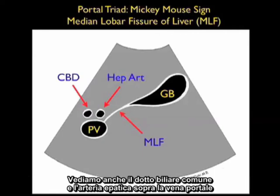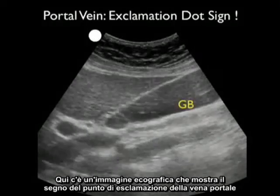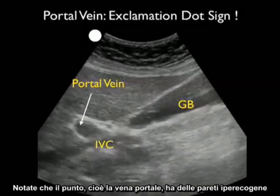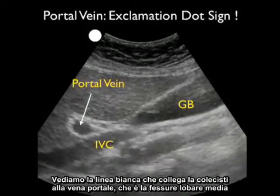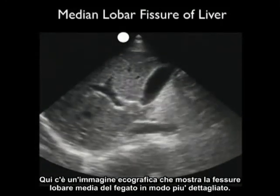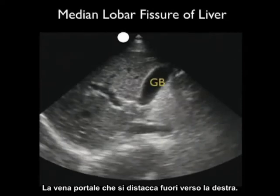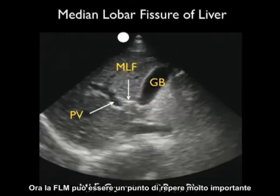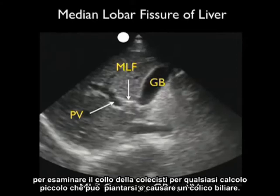We also see the common bile duct and hepatic artery on top of the portal vein, making up the structures of the portal triad. Here's an ultrasound image showing the portal vein exclamation dot sign — the gallbladder to the right makes the exclamation and the portal vein to the left makes the dot. Notice the portal vein has hyperechoic walls due to bringing fatty blood from the intestine to be filtered by the liver. We see the white line connecting the gallbladder to the portal vein — the median lobar fissure — and posteriorly the inferior vena cava. The MLF is a very important landmark for walking your way up to the neck of the gallbladder to inspect for small stones that may be lodged there causing biliary colic.